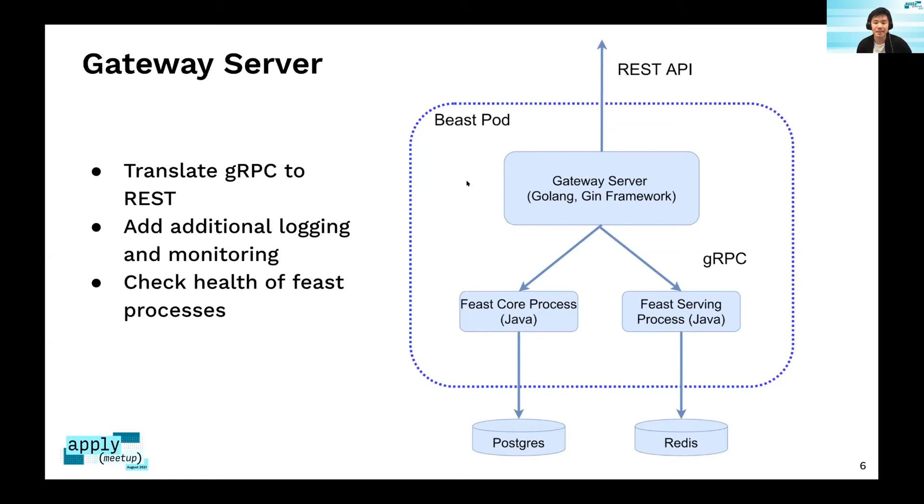We also have an additional layer - a gRPC gateway server. Basically this server is in charge of translating gRPC into REST API. We use a tool called gRPC gateway that allows you to generate the Golang code from a protobuf, and the server was written in Gin framework. By having this additional server, if you have large data you might see some performance degradation, but it's still fine for online serving. This also allows us to add additional logging and monitoring, and the server would also check the health of the two Feast processes.